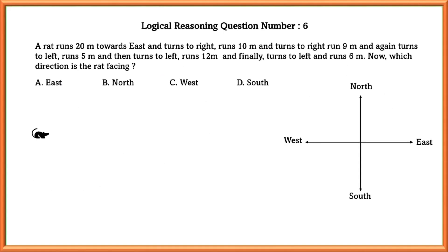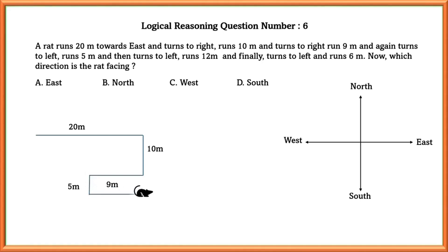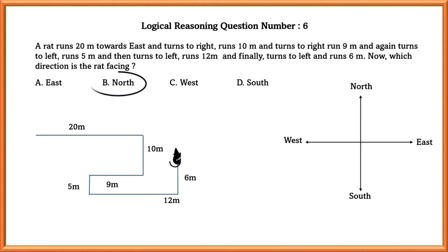Logical reasoning question number six: a rat runs 20 meters to the east, then turns to the right and runs 10 meters, then turns to the right again and runs 9 meters, turns to the left and runs 5 meters, then turns to the left and runs 12 meters, and finally turns left and runs 6 meters. Which direction is the rat facing? The rat is facing the north direction.